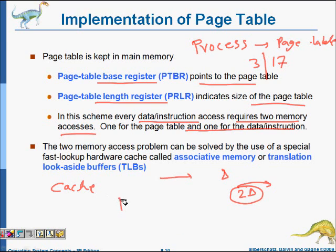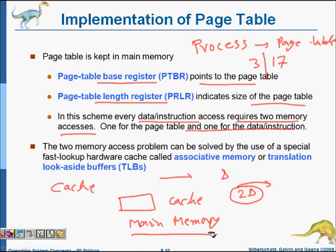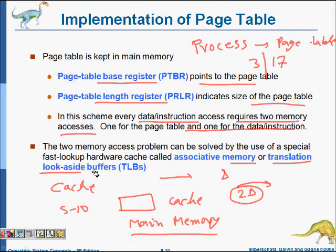A cache is a memory that is five to ten times faster than main memory. It is costlier, so it is small and cannot store the whole page table. It stores some important pages and their frame numbers — which pages are important is decided by algorithm. This is known as associative memory or Translation Lookaside Buffer, TLB.